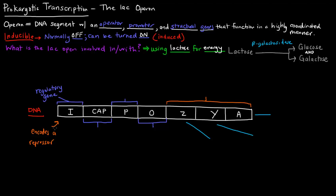This regulatory gene can, in other cases, encode for an inducer protein, but we'll talk more about that in a later video. The CAP site here stands for catabolite activator protein, and we'll talk about that in another video as well.